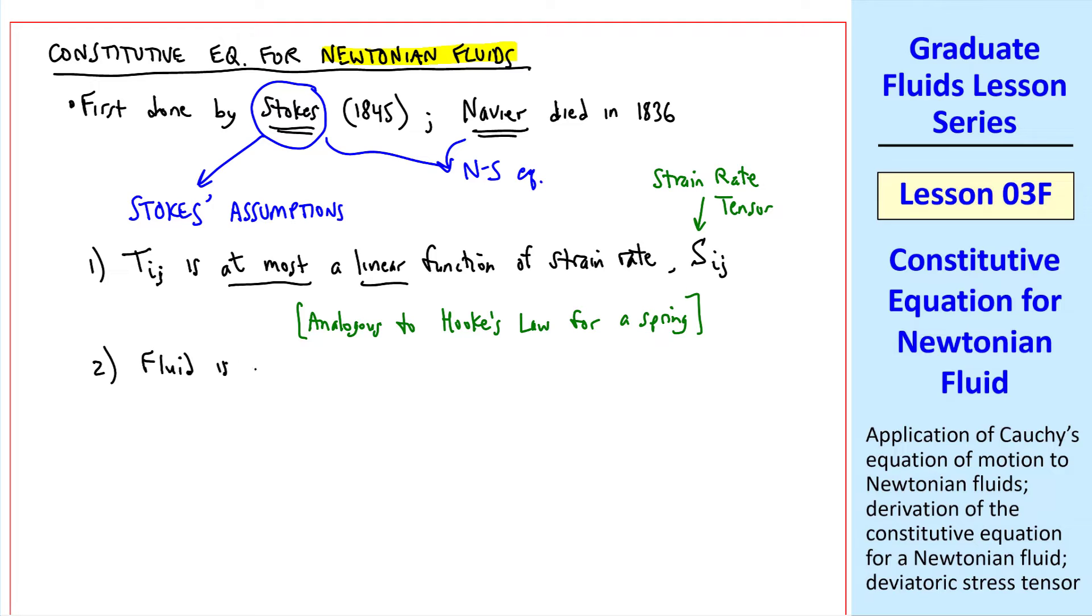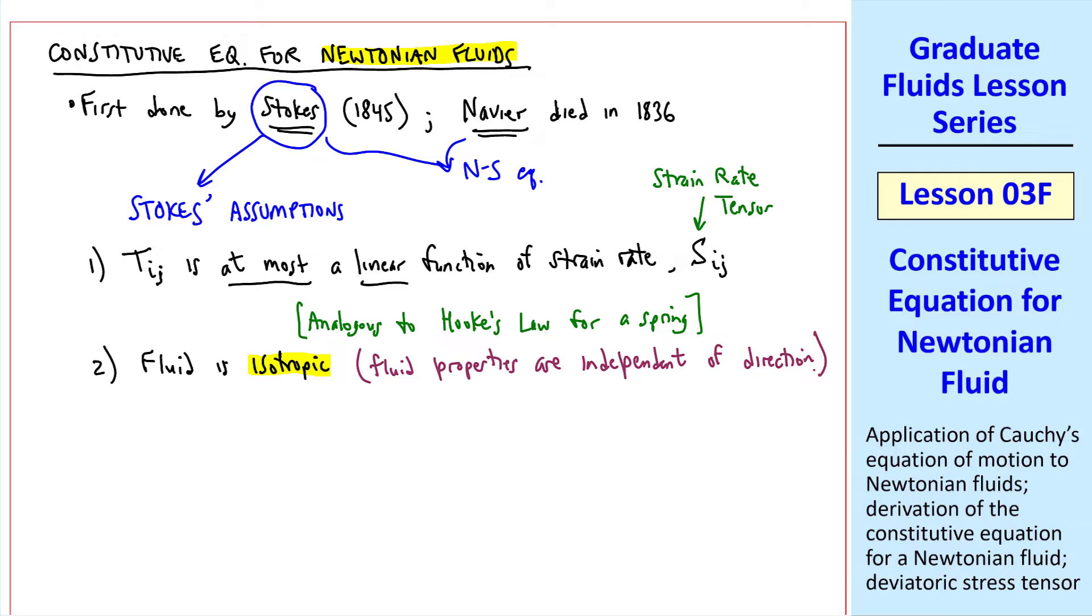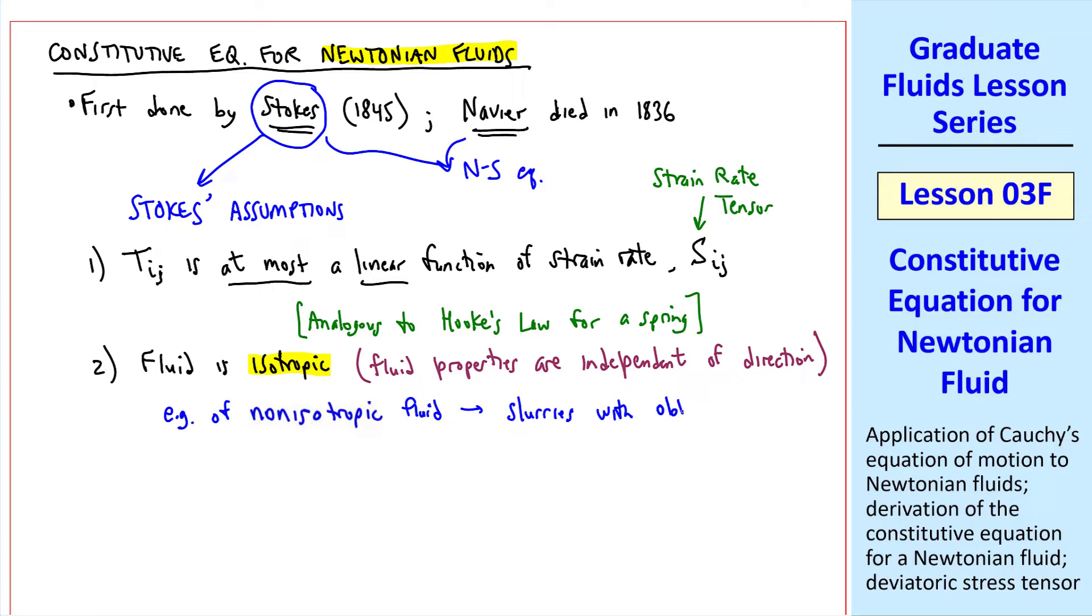Number two, the fluid is isotropic. This means that fluid properties are independent of direction. This is true for most fluids. Here's an example of a non-isotropic fluid: slurries with oblong particles.